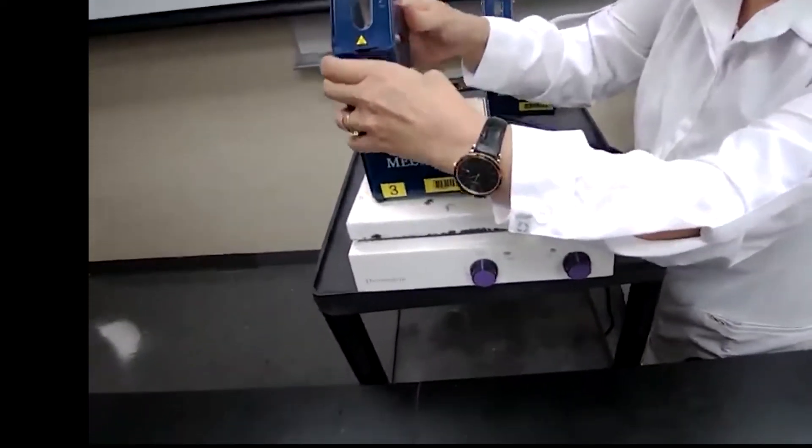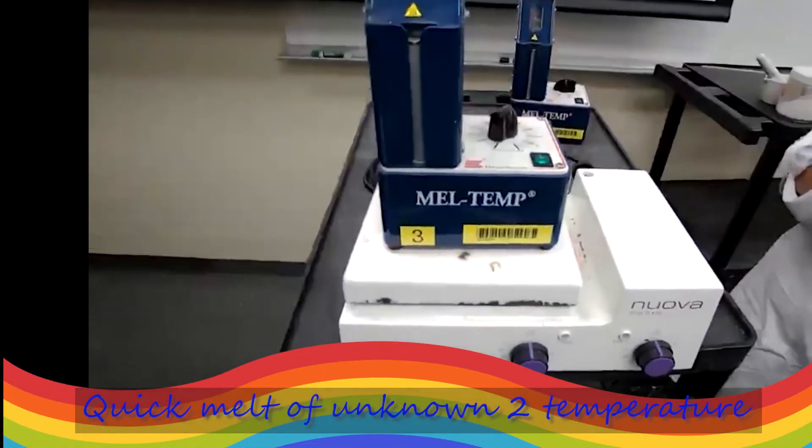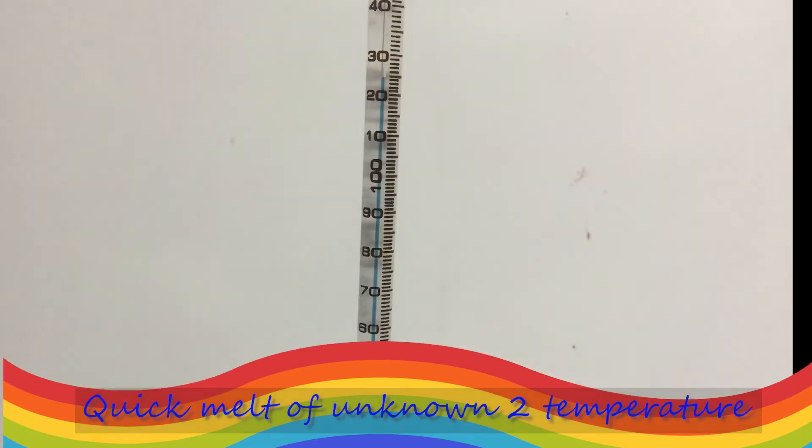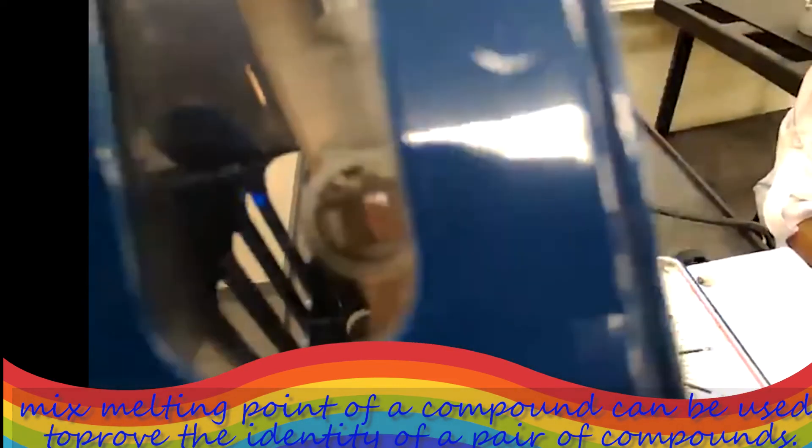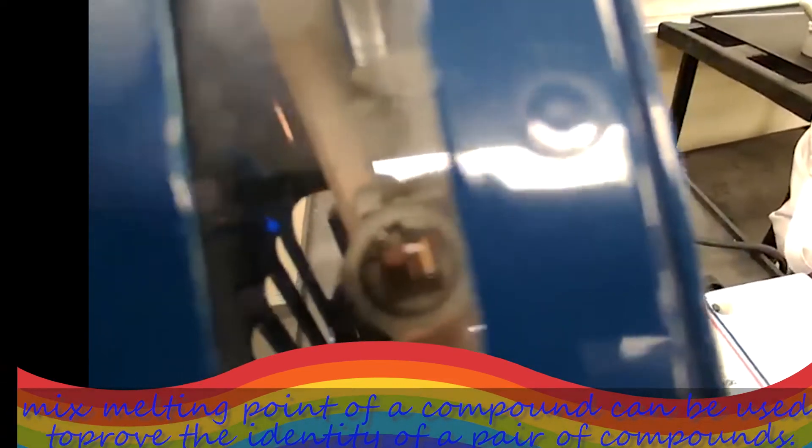Step three for this one is going to be mixed melting point. So as soon as I find the melting point for this sample, I'm going to look at the table and find three compounds that they have very close melting point to my unknown number two. And with the mix, like I will make like a 50/50 mixture of my compound, the unknown with each of those three samples.